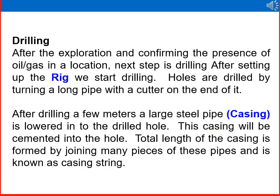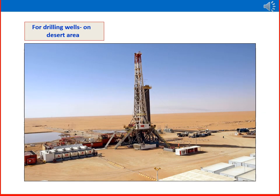After exploration and confirming the presence of oil and gas, drilling begins by turning a long pipe with a cutter on the end. After drilling a few meters, a large steel pipe called a casing is lowered into the drilled hole and cemented in place. The total length of the casing is formed by joining many pieces of pipe, known as a casing string.